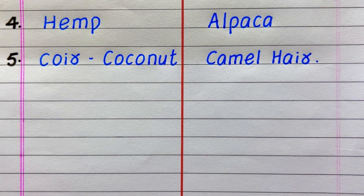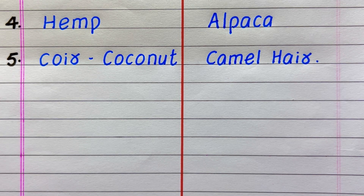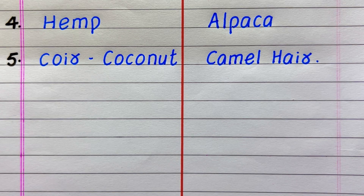Name of the fourth plant fiber is hemp, fifth coir (coconut coir). Name of the fourth animal fiber is alpaca, fifth camel hair. Thanks for watching, please do like the video and don't forget to subscribe to my channel.